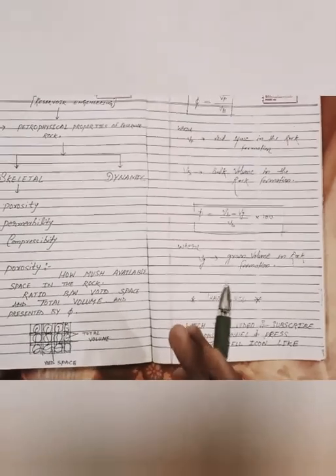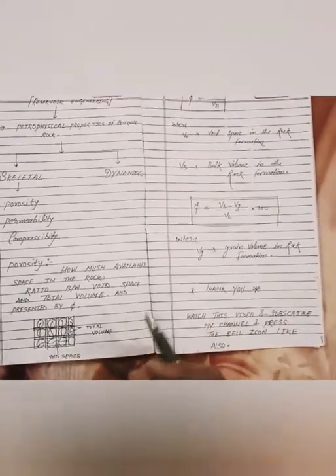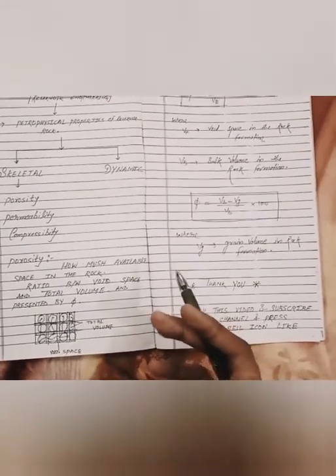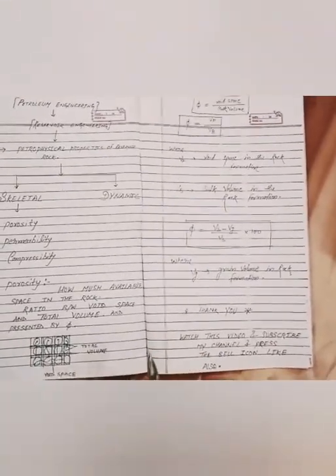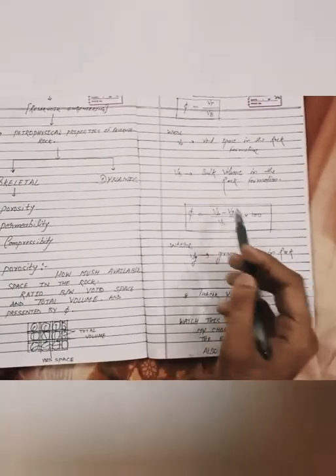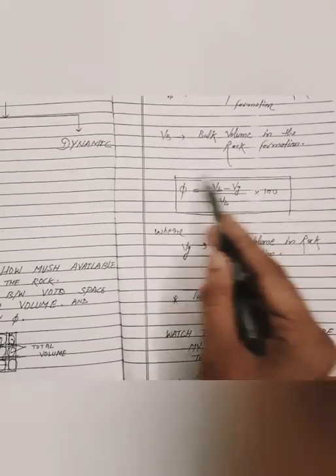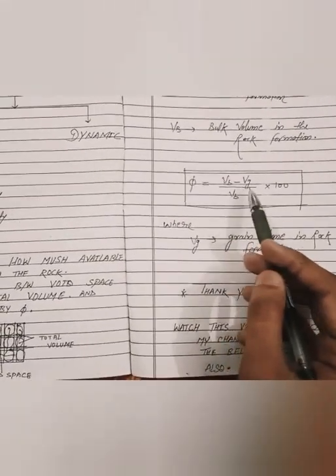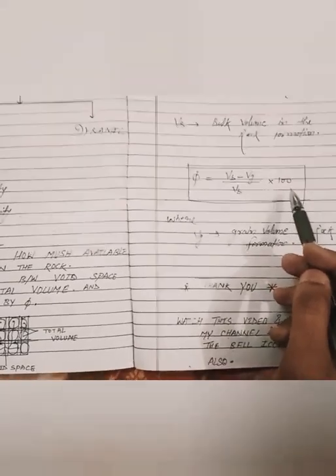To summarize porosity: it is how much available space is in the rock — the void space upon total bulk volume. The key formulas are Vp / Vb, and (Vb − Vg) / Vb × 100.